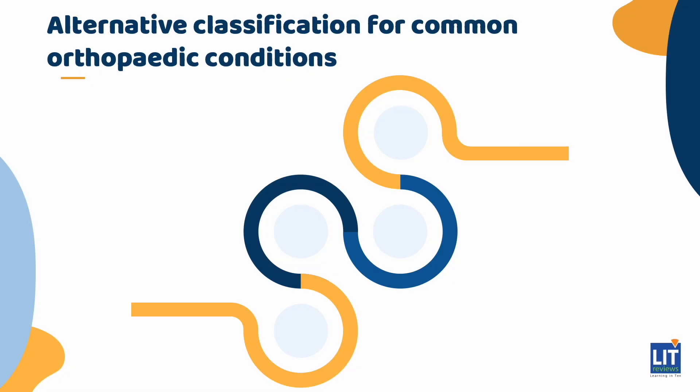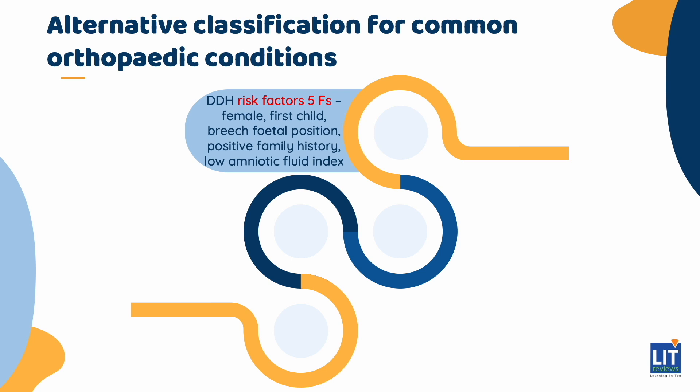If we focus only on orthopedic conditions, we can first differentiate causes based on whether the limp is painless or painful. A common painless condition would be DDH. An easy way to remember the risk factors would be the 5 Fs: female, first child, breech fetal position, positive family history, and low amniotic fluid index.